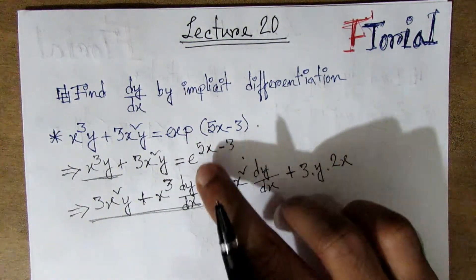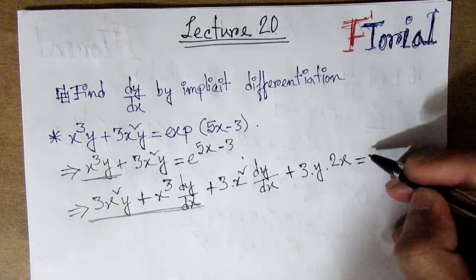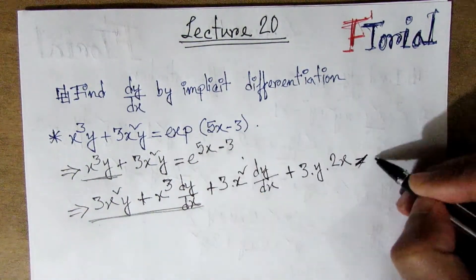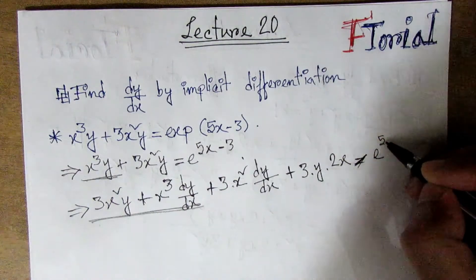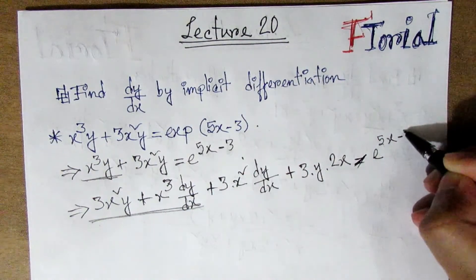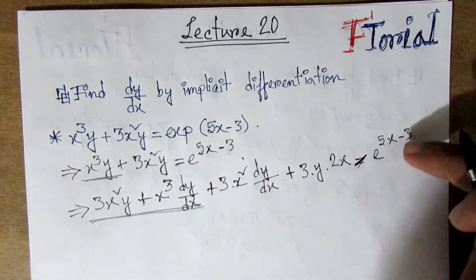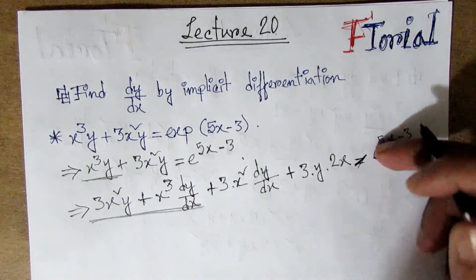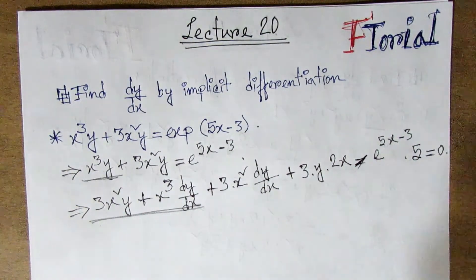On the right side, the differentiation of e^(5x-3) equals 5e^(5x-3). So this equals 0, giving us 5e^(5x-3) = 0.